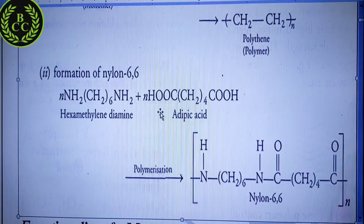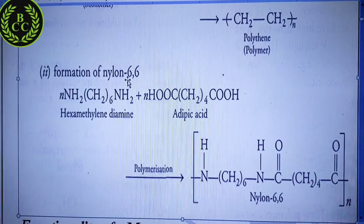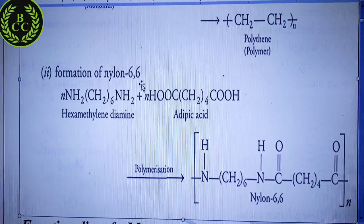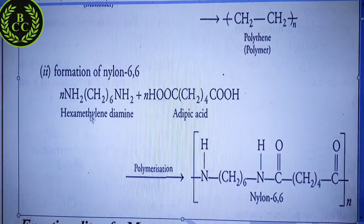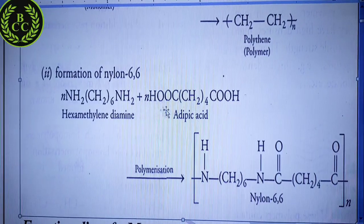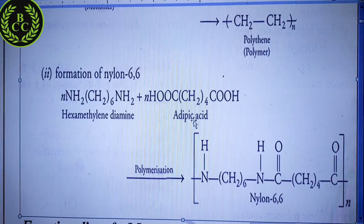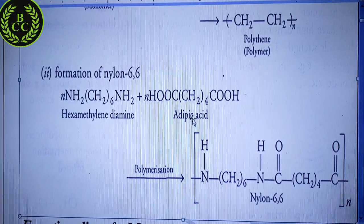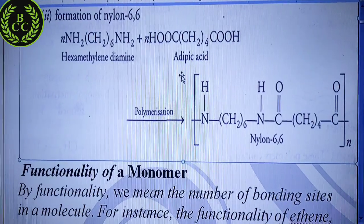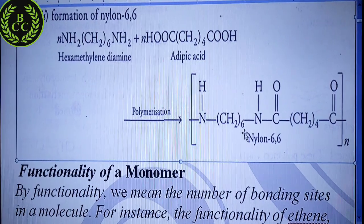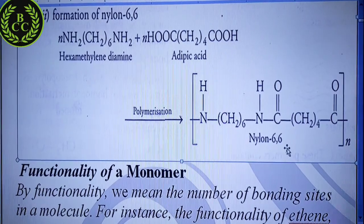Now, why do we call it Nylon 6,6? You can see the significance of this: hexamethylenediamine has 6 carbon atoms, and adipic acid also has 6 carbon atoms. That is why it is called Nylon 6,6. Hexamethylenediamine and adipic acid are combined together, and through polymerization, a big molecule is formed which is called Nylon 6,6.